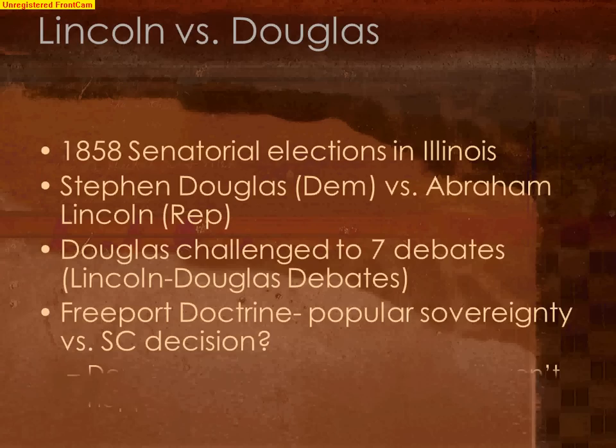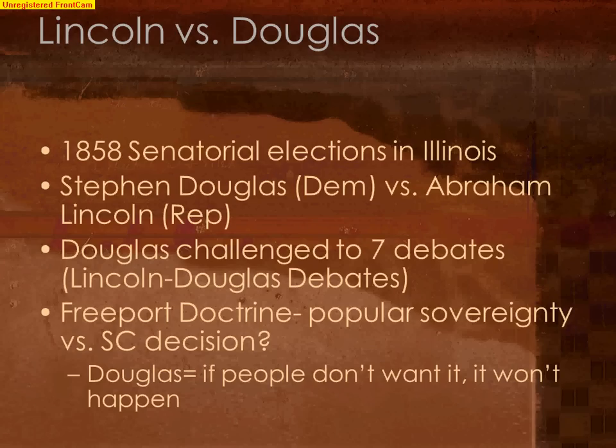In 1858, there was an election for who would become the next senator from the state of Illinois. The incumbent was Stephen Douglas — a long-time senator known nationally for his rousing oratory and considered one of the best speakers at the time. He had promoted national legislation, so everyone knew Stephen Douglas whether they lived in Illinois or not. Running against him from the new Republican Party was the little-known Abraham Lincoln. Lincoln had served minor political offices, including one term in the House of Representatives, but compared to Stephen Douglas, nobody knew who Abraham Lincoln was in 1858.